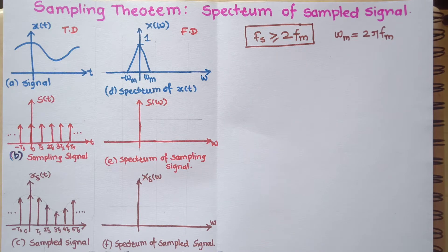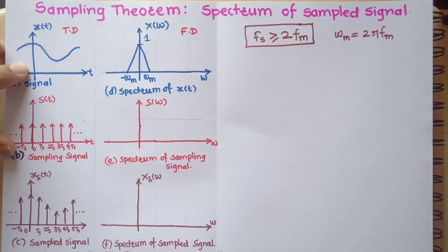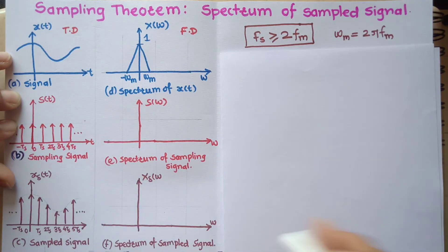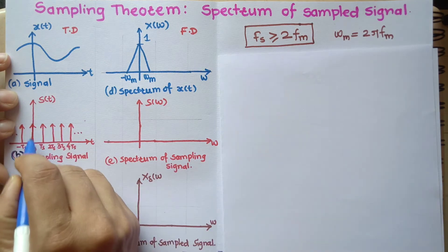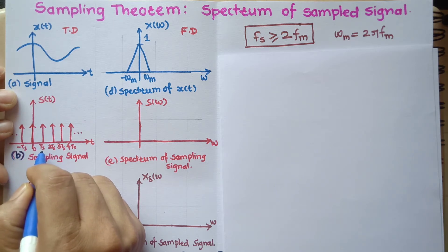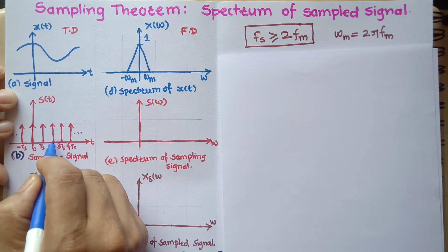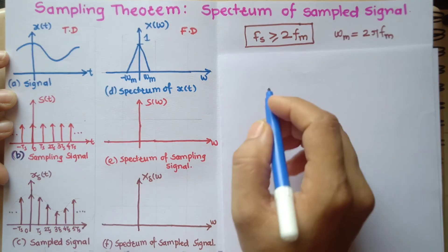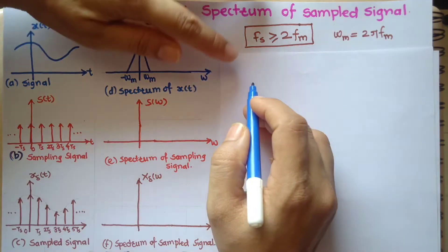First, we consider the signal x(t) as a finite energy, band-limited signal — specifically a low-pass signal having some maximum frequency. We also have the train of impulses s(t), and we should first write s(t) in mathematical form. This s(t) is constructed from impulses: there is δ(t), a shifted version δ(t−Ts), and another shifted version δ(t−2Ts). So s(t) is constructed by adding these individual signals.